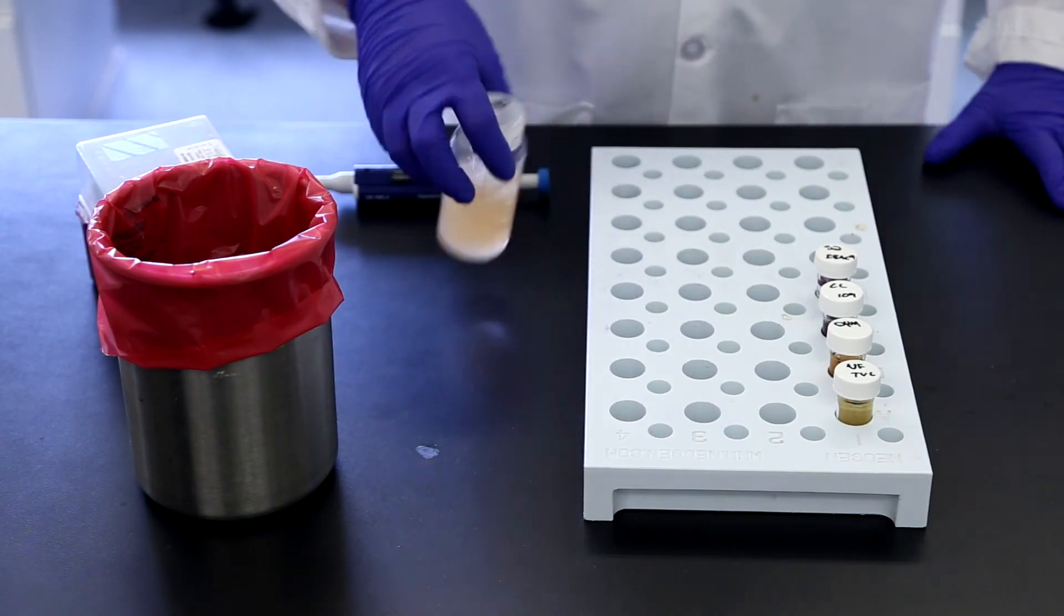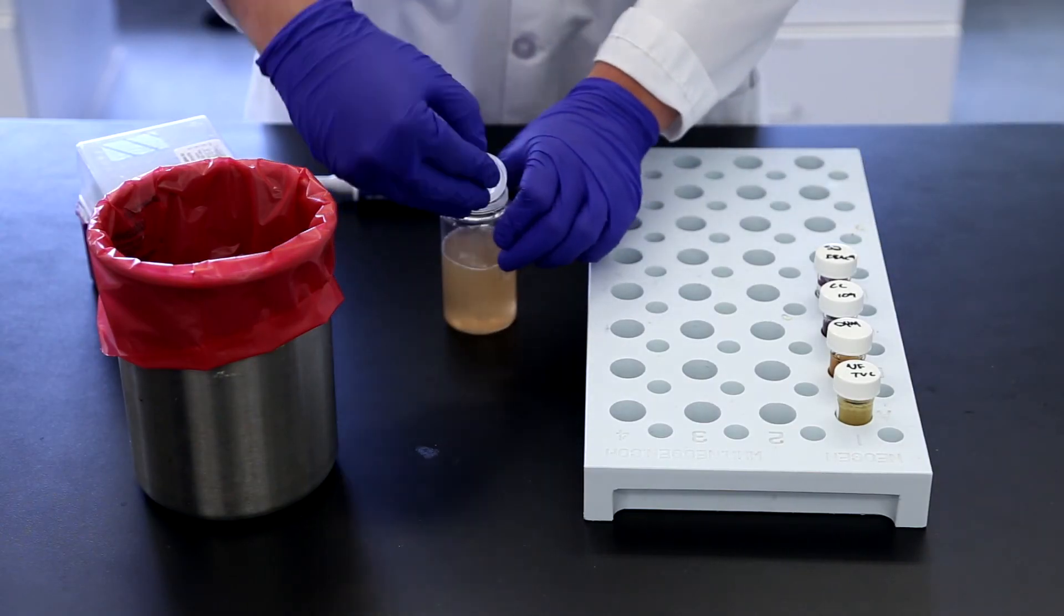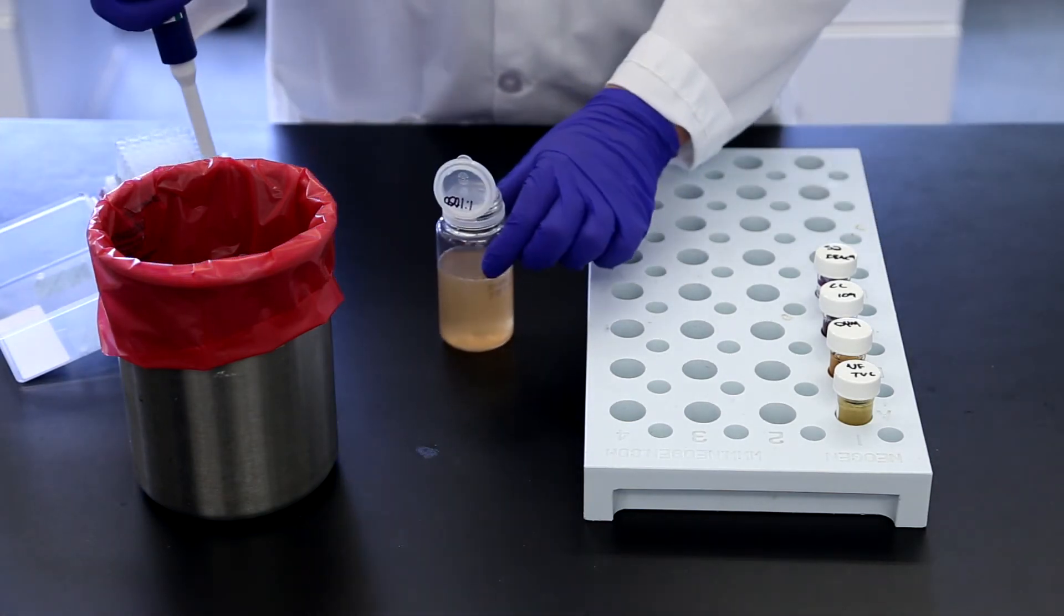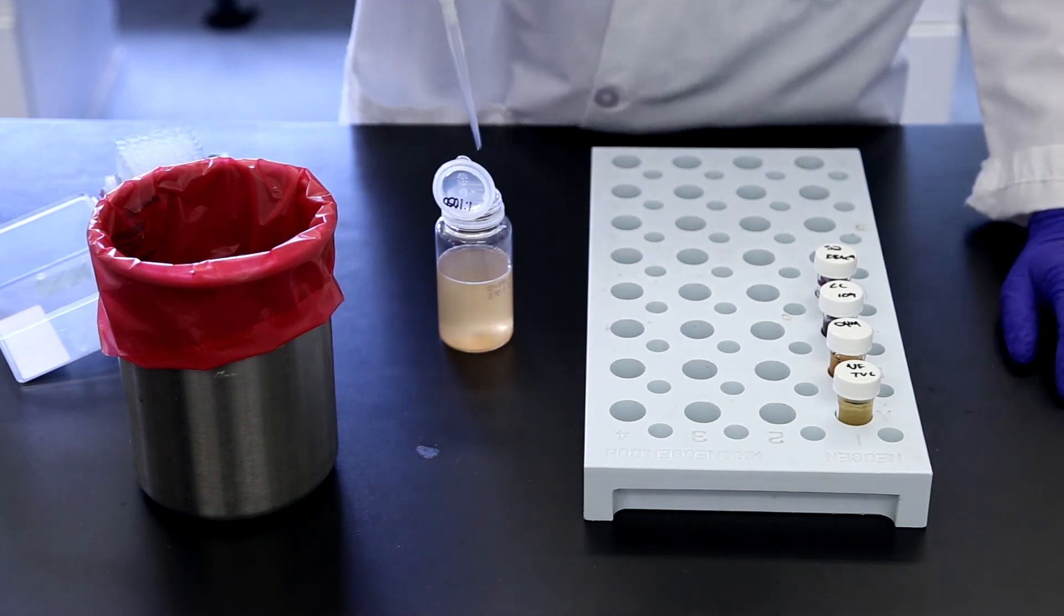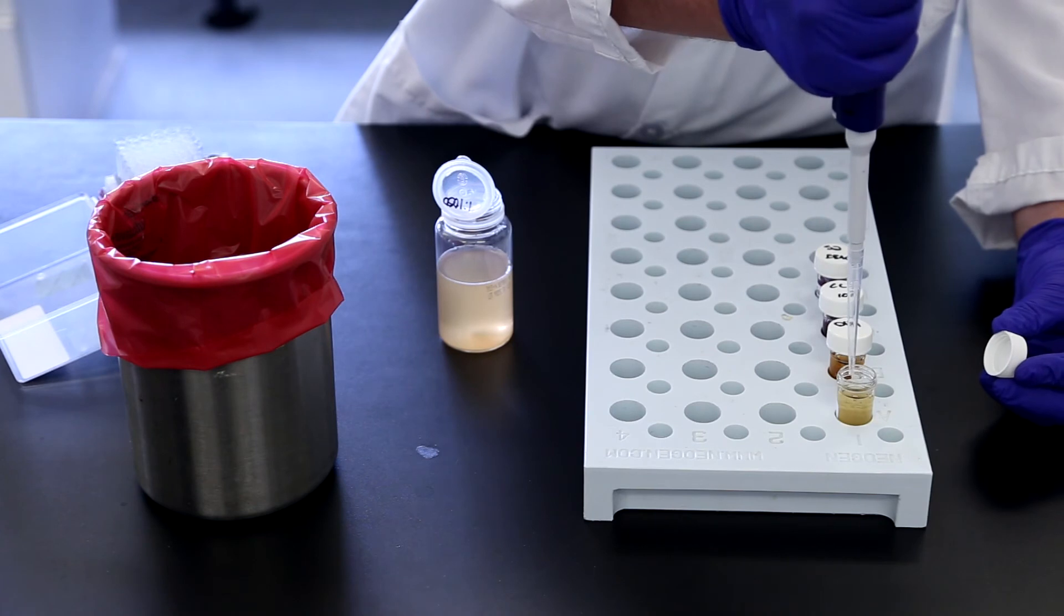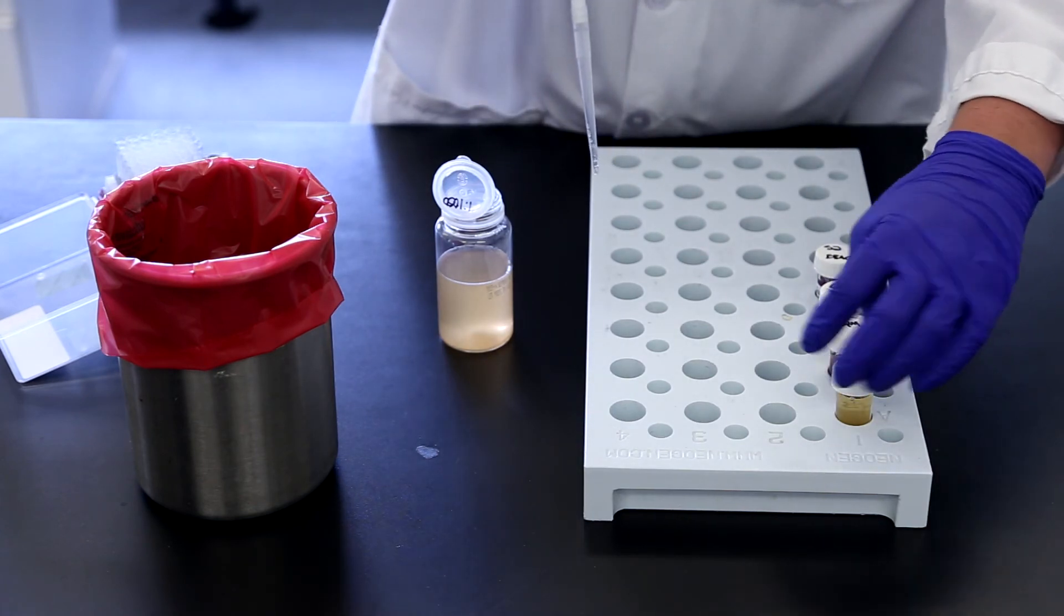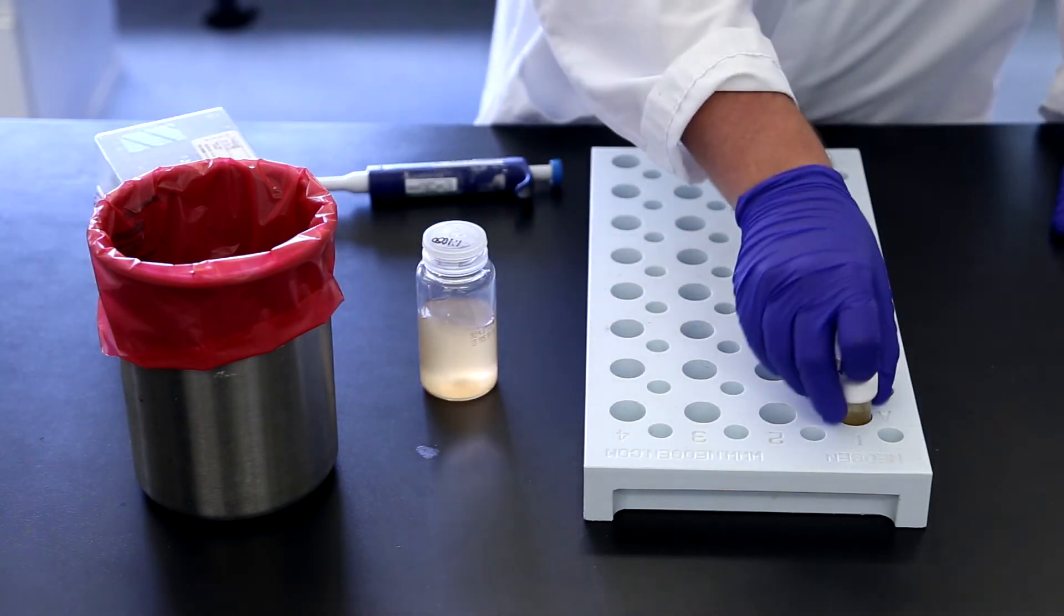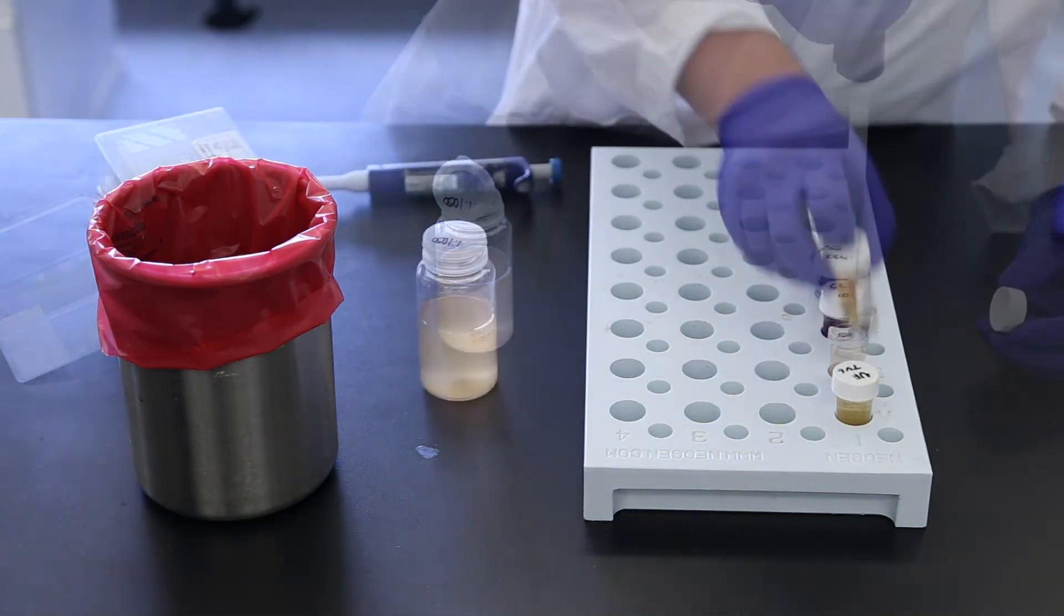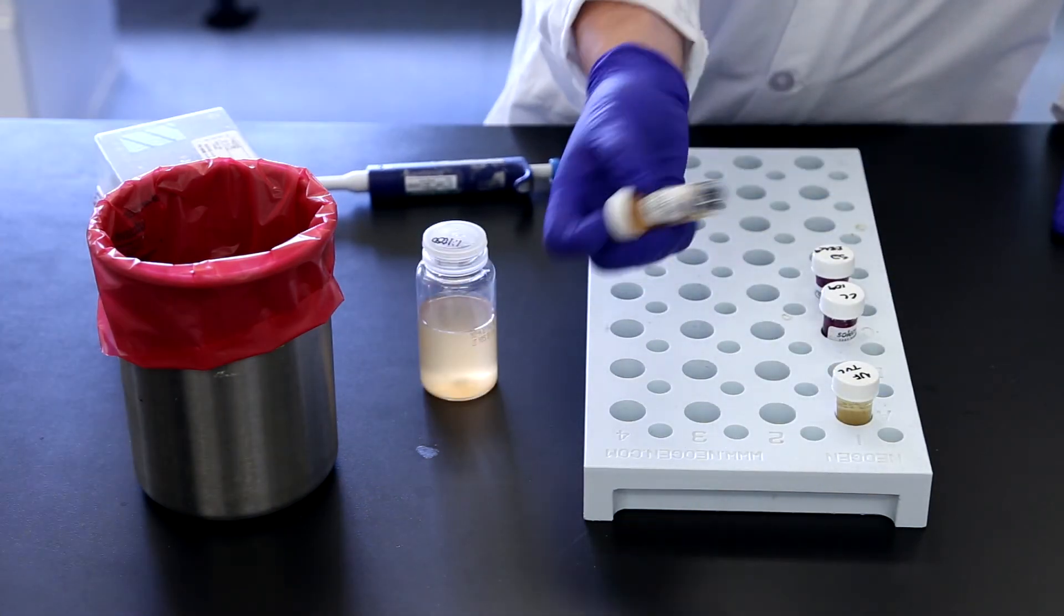Transfer the appropriate amount of sample to the vial. Secure the vial lid. Gently invert the vial three times and place in a vial rack. Repeat as needed for necessary specification vials.